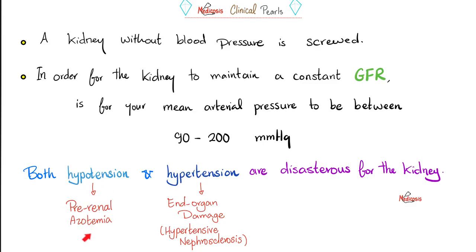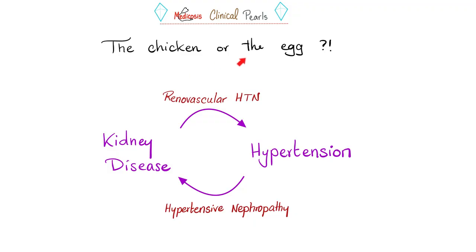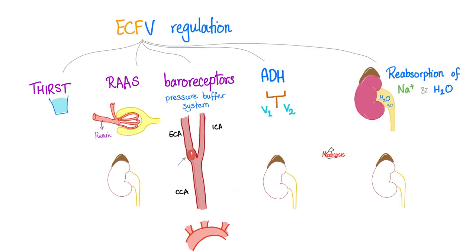Low blood pressure is bad for the kidney — you get acute kidney failure. High blood pressure is also bad for the kidney — you can get chronic kidney failure. There is a chicken-or-the-egg story: kidney disease can cause hypertension, and hypertension can cause kidney disease. When the kidney raises blood pressure, we call this renovascular hypertension. When high blood pressure damages the kidney, this is called hypertensive nephropathy.